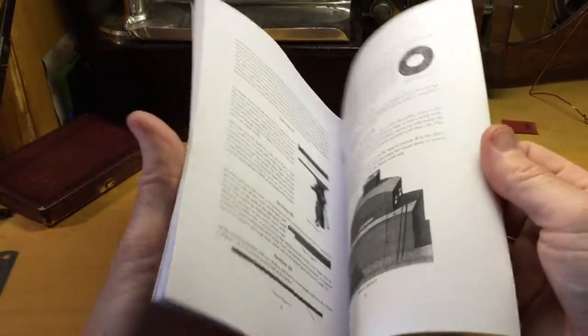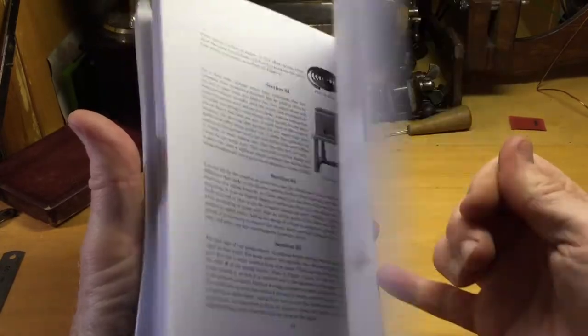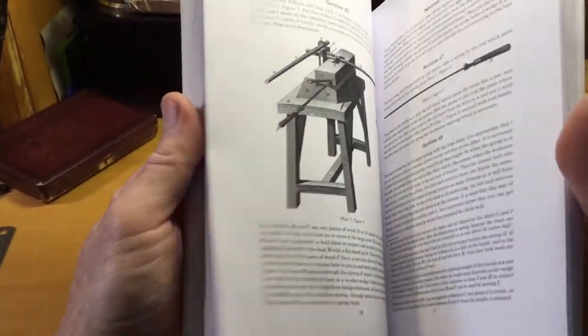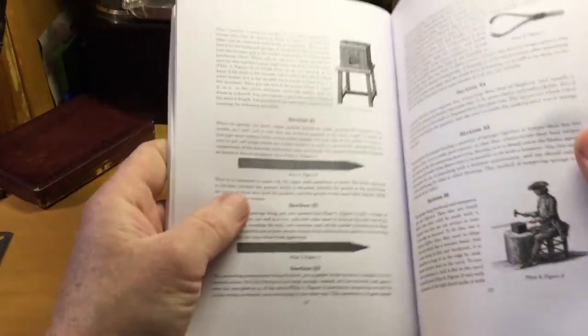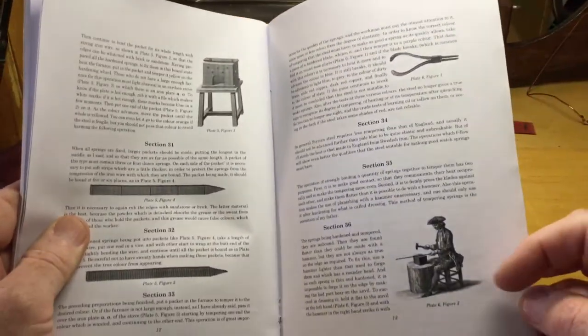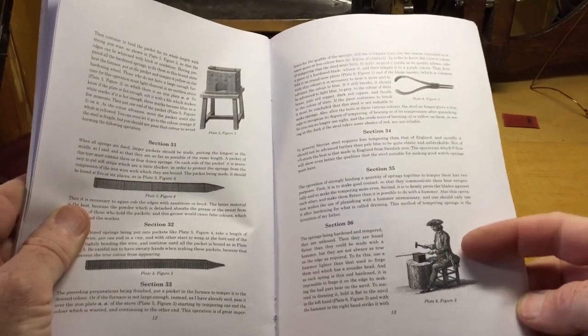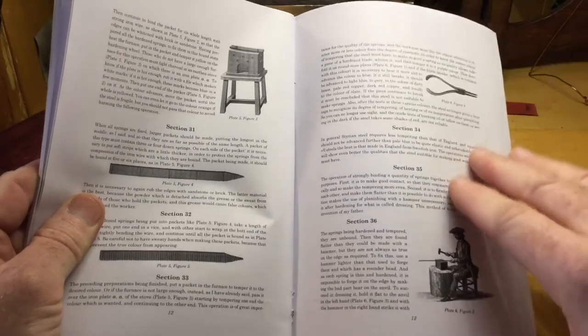In it are all the original etchings scattered throughout the text for easy reference, with quite clear representations and descriptions of the tools and their uses. Even down to doing some light hammering on the mainsprings when they've been hardened and tempered to bring them back into true.